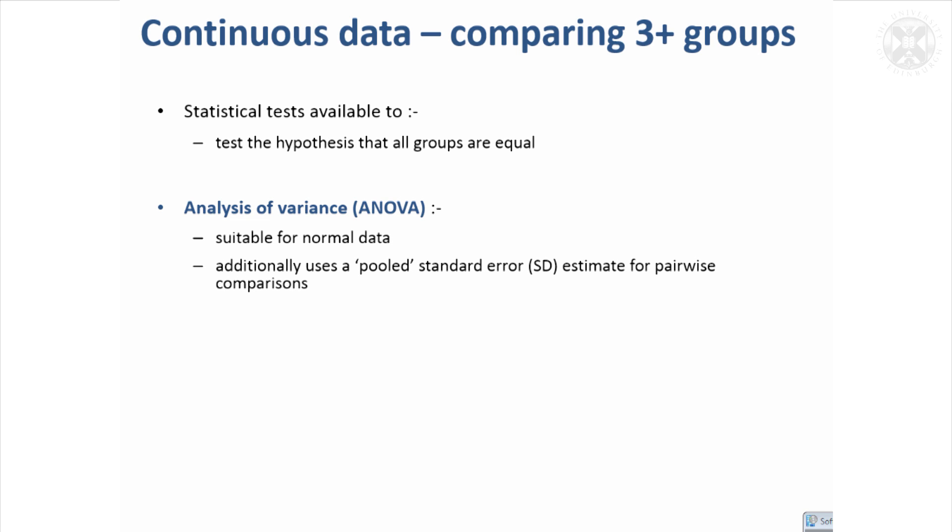The last area I want to look at before we break is when you've got continuous data but you've got three or more groups and you want to compare them all at once. So far we've only looked at the t-test, which is comparing two groups. But if you've got three or more groups, probably a sensible hypothesis to consider is that all your groups are equal and you try and disprove that.